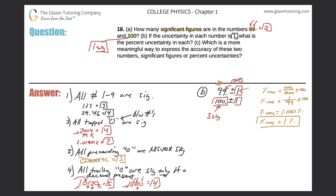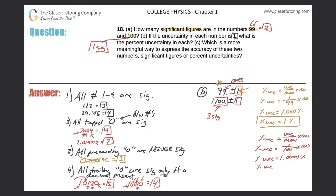For 100: percent uncertainty = (1 / 100) × 100 = 1.0000%. Again, since the uncertainty value of 1 has only one significant figure, the answer cannot have more than one significant figure. Therefore, the percent uncertainty is also 1%. That is the answer for the second part of part B.